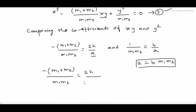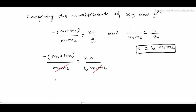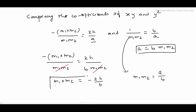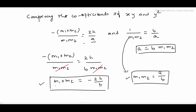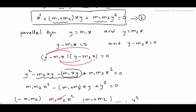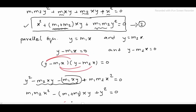From the denominator, m1m2 will cancel, and the negative term on the right side is equal to minus 2h divided by b. Since m1m2 is equal to b by a, substituting and simplifying gives m1 plus m2 equal to minus 2h divided by b, and m1m2 equal to a by b. Now we can replace these two values in the perpendicular equation.